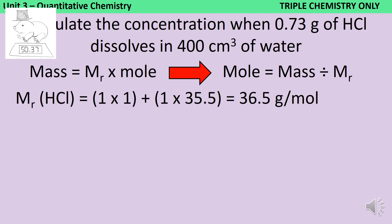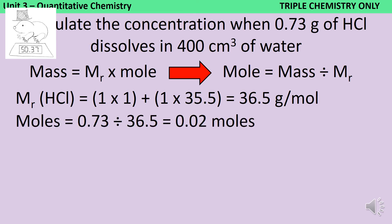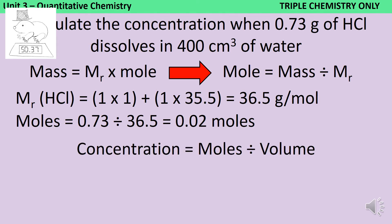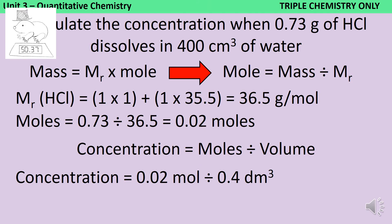The Mr of hydrogen chloride is 1 × 1, because that's the relative atomic mass of hydrogen, plus 1 × 35.5, because that's the relative atomic mass of chlorine, giving a total of 36.5 grams per mole. So 0.73 grams divided by 36.5 grams per mole gives 0.02 moles. Now I can complete the concentration calculation: 0.02 divided by 0.4 decimetres cubed — because the volume needs to be in decimetres cubed, not centimetres cubed — giving a concentration of 0.5 moles per decimetre cubed.